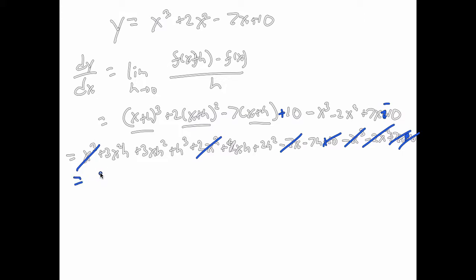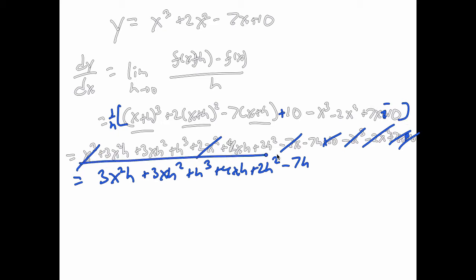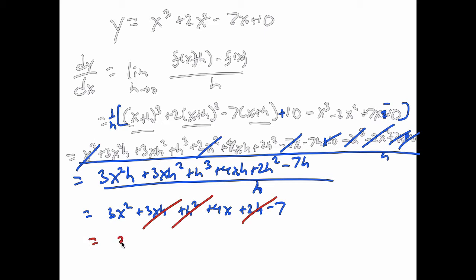So we go through and do this. And we end up with 3x²h + 3xh² + h³ + 4xh + 2h² and that's minus 7h. Now, finding the limit as h goes to 0, get rid of all the h's. Leaving finally 3x² + 4x - 7, which is the derivative of that function up top.